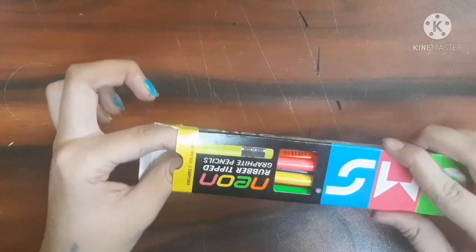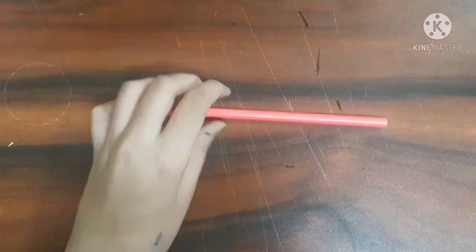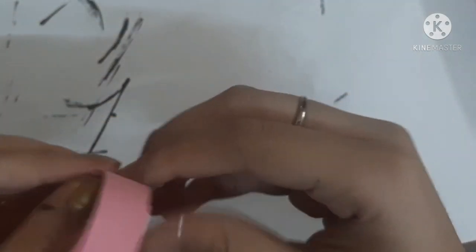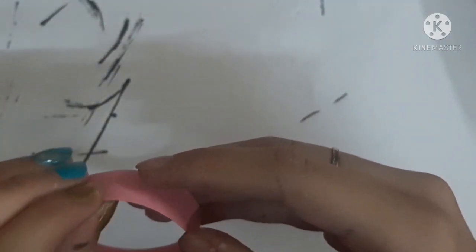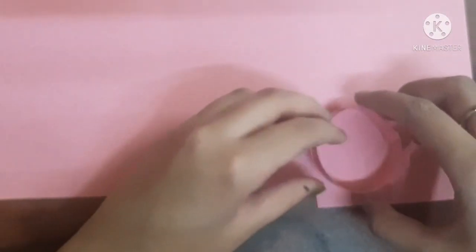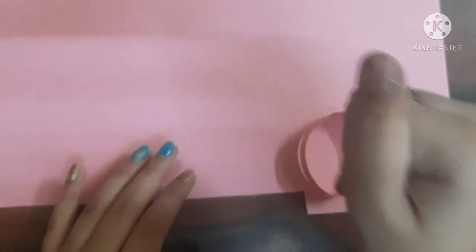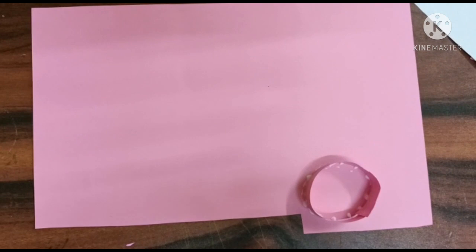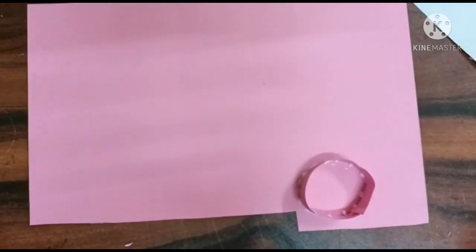So guys how can we forget to decorate our pencils or pens. So let's get started, I'm so excited. So first I took a pink strip of paper and then I just made a hoop with it like this, circular shaped hoop. And now I'm just going to stick this type of hoop on a pink sheet.